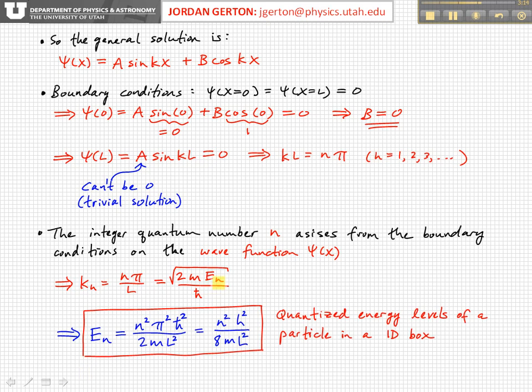So now if you solve this simple equation for the energy, we now get the quantized energies, the allowed energy levels, En, that are a function of n, and the mass, and L, and then some constants. So the allowed energy levels are equal to n²π²ℏ² divided by 2mL².